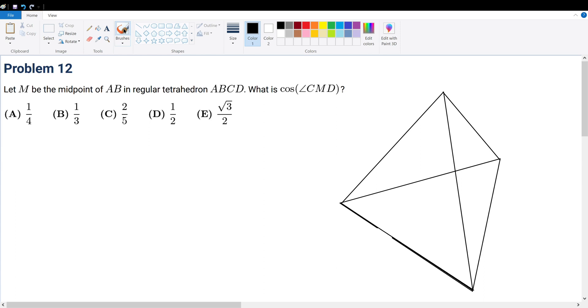Problem 12. Let M be the midpoint of AB in regular tetrahedron ABCD. What is cosine of angle CMD?